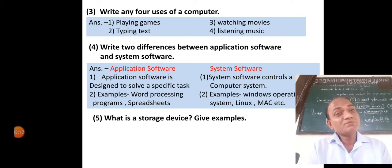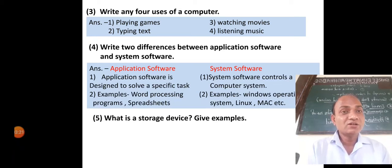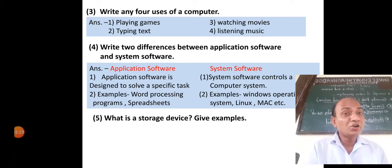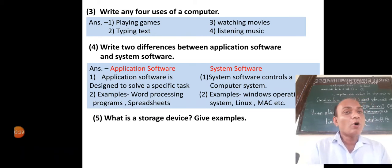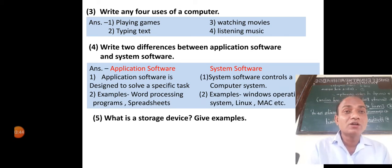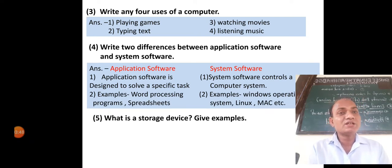System software controls the whole computer system — it has control over the entire computer system and can control the complete computer. For example, Windows operating system, Linux operating system, and Mac operating system. Without an operating system we cannot run the computer. This is called system software. These are the two differences between application software and system software.